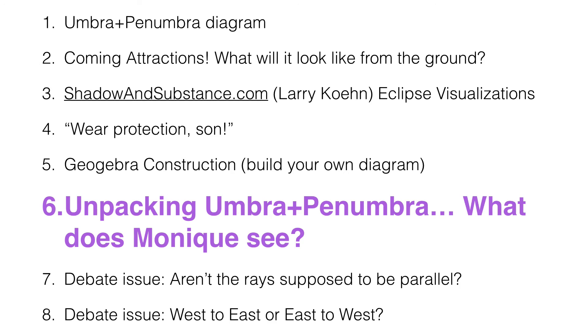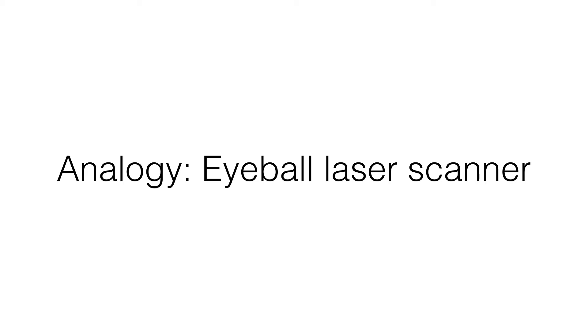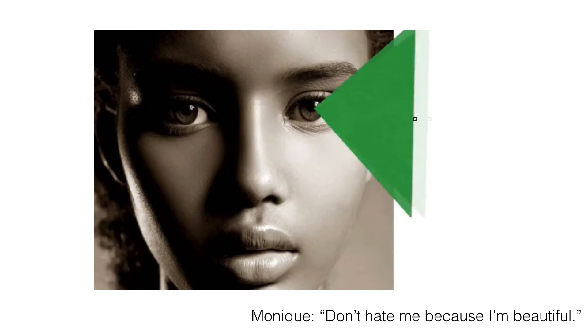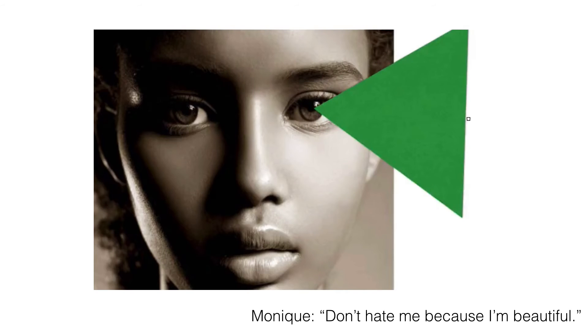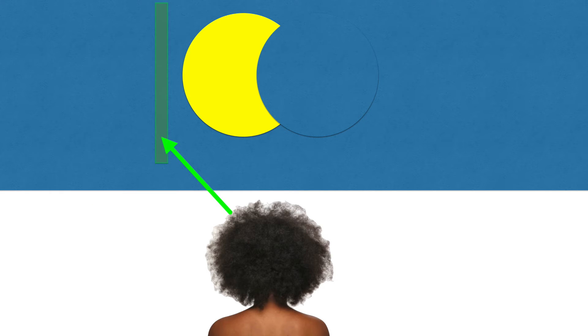So next we're going to unpack the umbra and penumbra diagram. What does Monique see from the ground? First thing we're going to do is pretend that her eye is a laser scanner, like something from one of those science fiction movies. So she can scan from left to right. So here she is looking up at the sky, looking at the sun, which is partially obscured by the moon, and then she can scan left to right. And that's how we're going to explain what's going on in these diagrams.